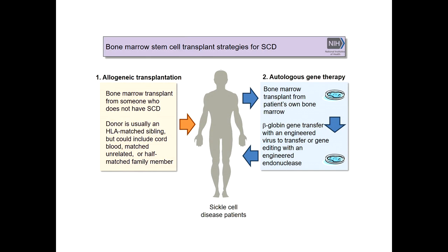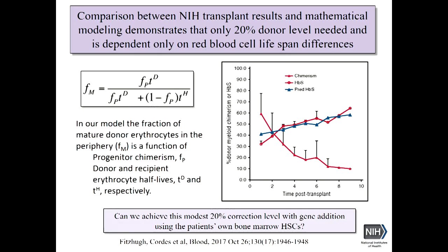I'm talking about the panel on the right — bone marrow transplant coming from the patient's own bone marrow, as Courtney described briefly. For that, we've principally relied on viral vectors based on viruses in nature that naturally integrate themselves into our DNA. We can hijack those viruses to form vectors to transfer the correctly spelled beta globin gene.